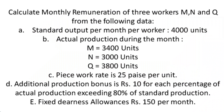Calculate the monthly remuneration of three workers M, N, and Q. The following data is given for these three workers. The standard output per month per worker is 4000 units — so each worker needs to produce 4000 units in a month. The actual production during the month were 3400 units, 3000 units, and 3800 units. The piece work rate is 25 paisa per unit, so per unit produced they will get 25 paisa.